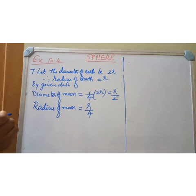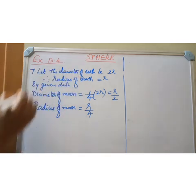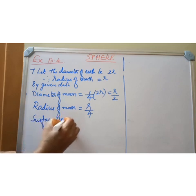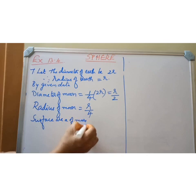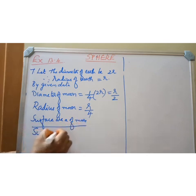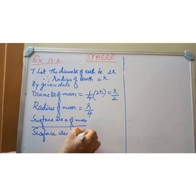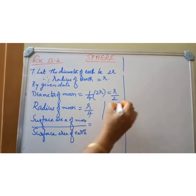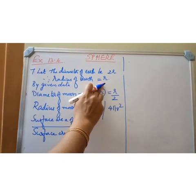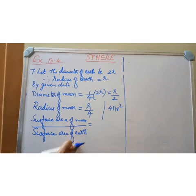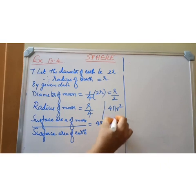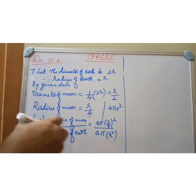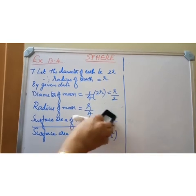I am representing the surface area of the moon by S1 and the surface area of the earth by S2. S1 by S2 is the surface area of the moon divided by the surface area of the earth. The formula is 4πR². Here R is the radius of the earth and R/4 is the radius of the moon.